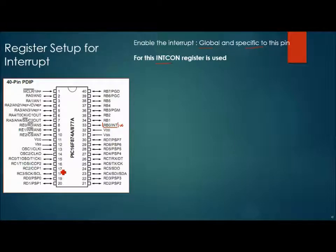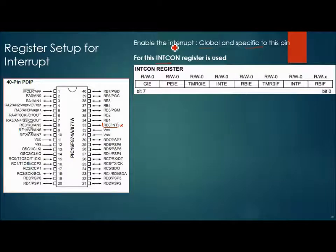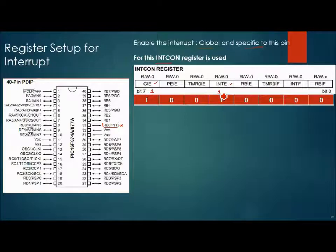Here you see the picture of INTCON, it is an 8-bit register. Here we need to set the GIE and INTE bits. GIE bit enables the global interrupt and INTE enables the individual interrupt associated with RB0.